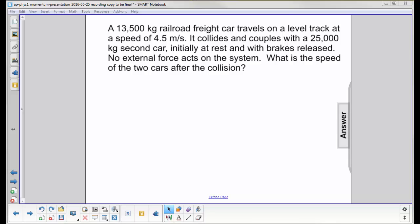A 13,500-kilogram railroad freight car travels on a level track at a speed of 4.5 meters per second. It collides and couples with a 25,000-kilogram second car initially at rest and with the brakes released. No external force acts on the system. What is the speed of the two cars after the collision?